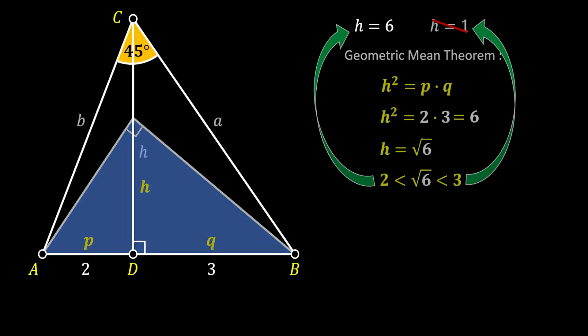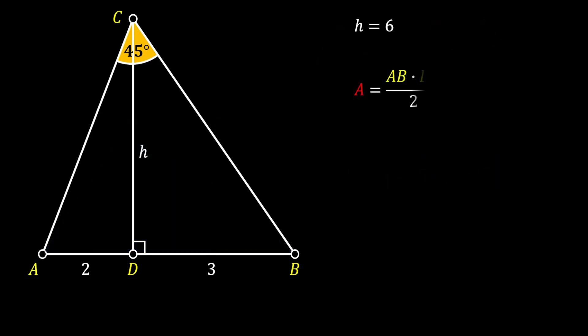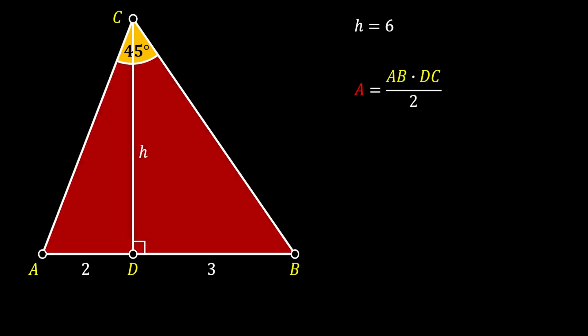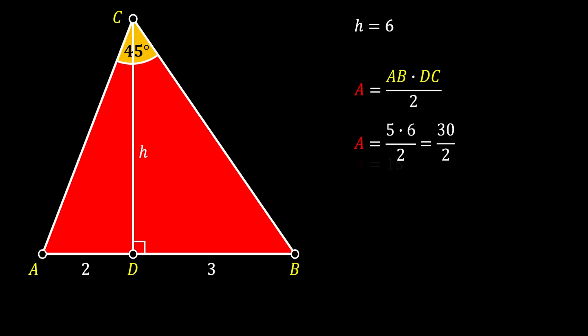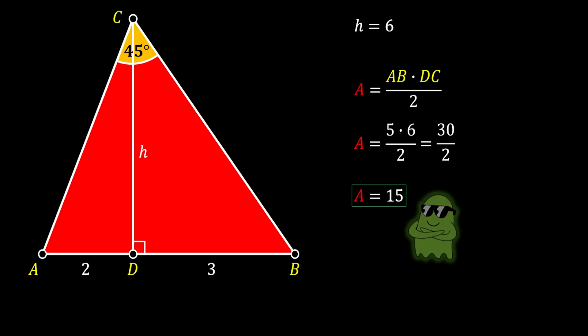Now it is straightforward to find the area of our red triangle as one-half of the product of the base and the height. Substituting our values, we finally get that the area of our red triangle is equal to 15 square units, and this is our solution.